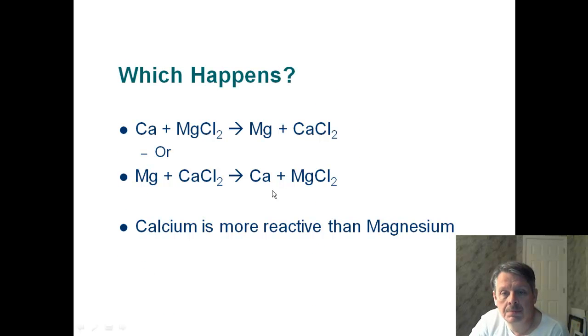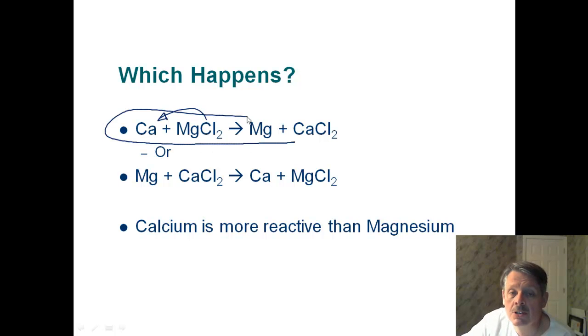All right, let's look at this one, calcium and magnesium. This says calcium is more reactive than magnesium, so I'm not even going to look. I'm going to assume that's right. All right, so chlorine would rather be with calcium than it would be with magnesium. Well, it's currently with magnesium, so it's going to get together with calcium, so this reaction up here happens.